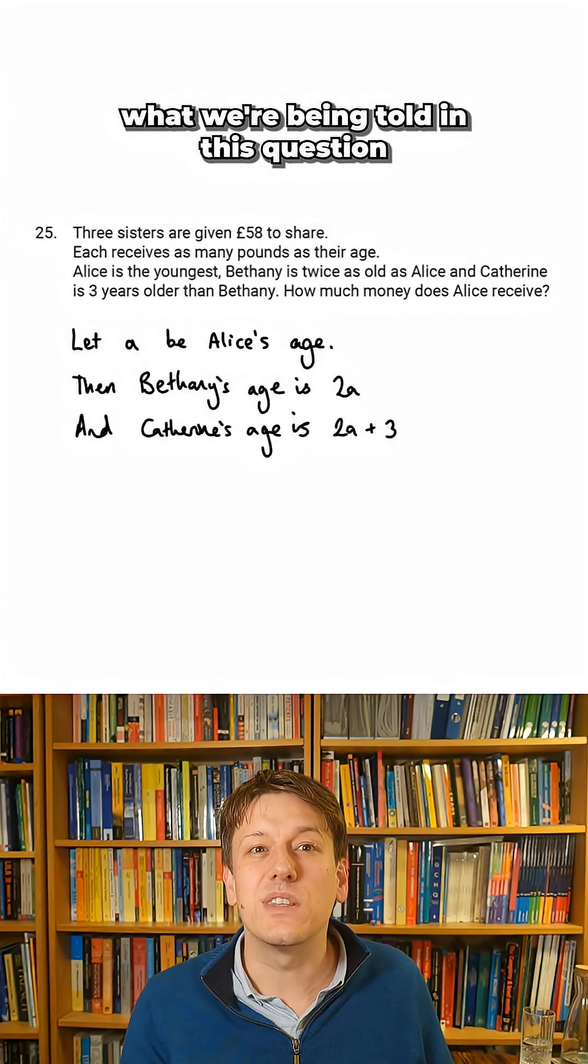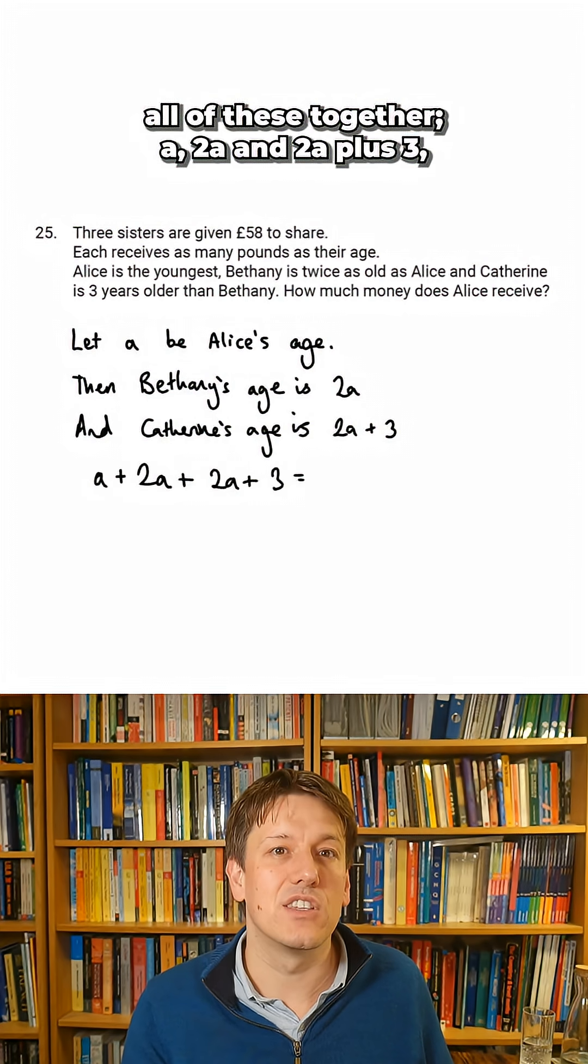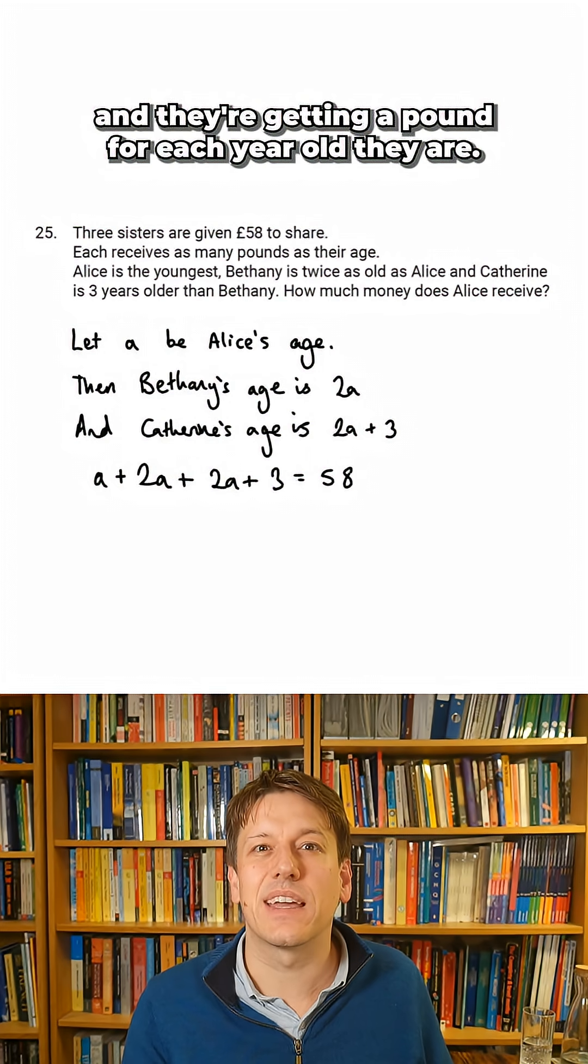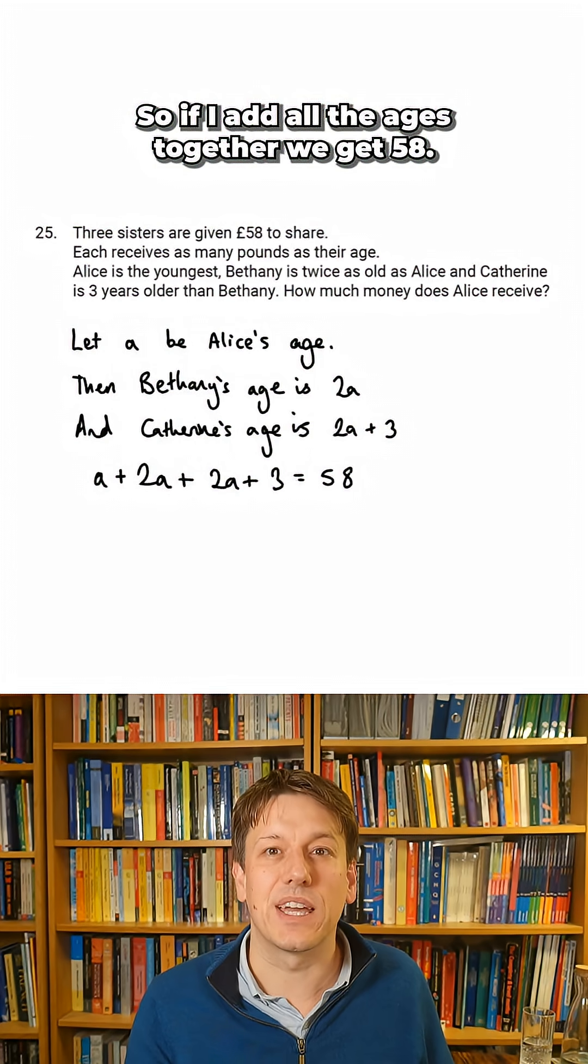So essentially what we're being told in this question is that when I add all of these together, A, 2A, and 2A plus 3, we're going to get 58, because they're getting £58, and they're getting a pound for each year old they are. So if I add all the ages together, we get 58.